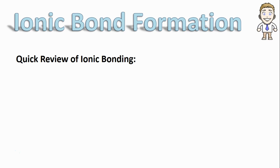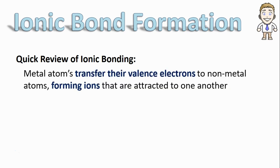Let's start off by quickly reviewing how ionic bonding works. In the last video we said that metal atoms transfer their valence electrons to non-metal atoms. This creates ions and those ions are oppositely charged so they are attracted to one another.